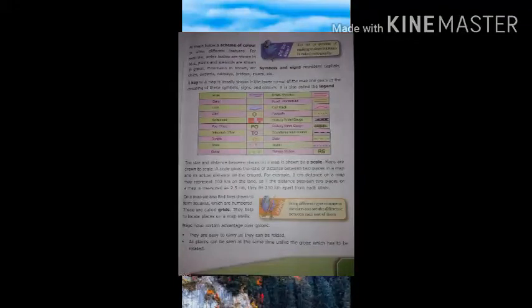On a map, we also find lines drawn forming squares which are numbered. These are called grids. They help to locate places on a map easily.